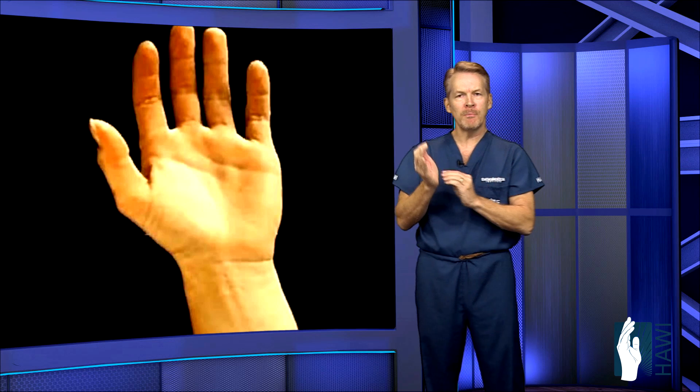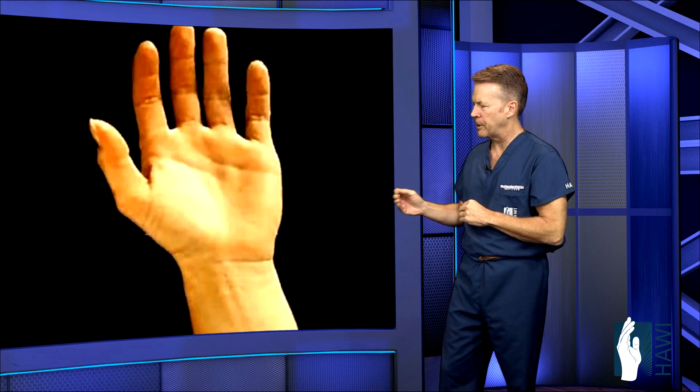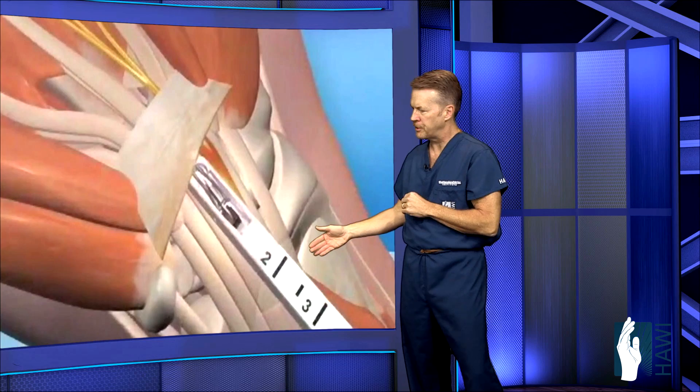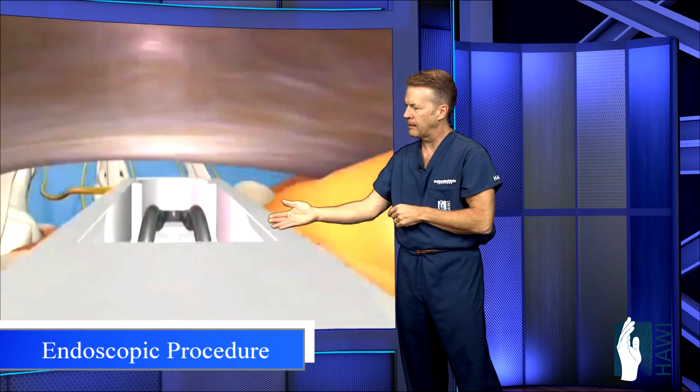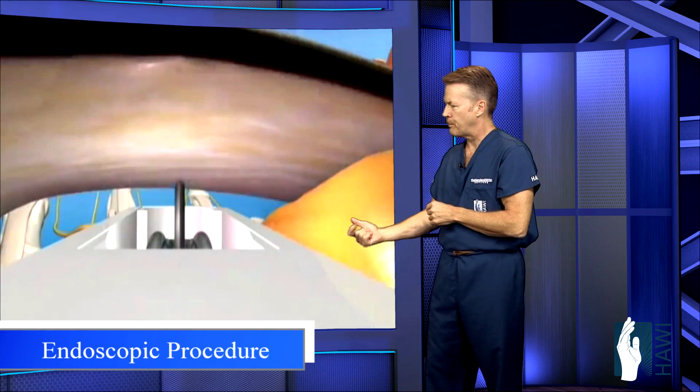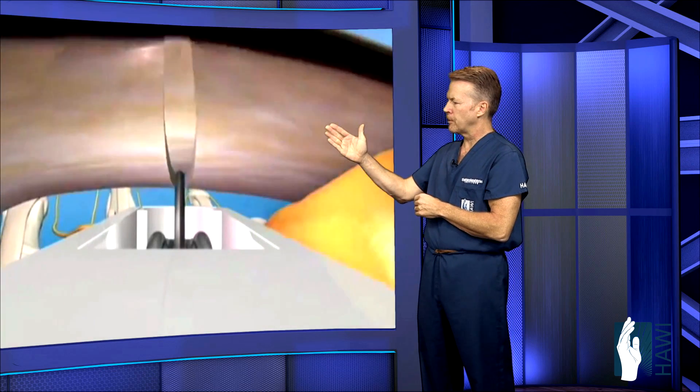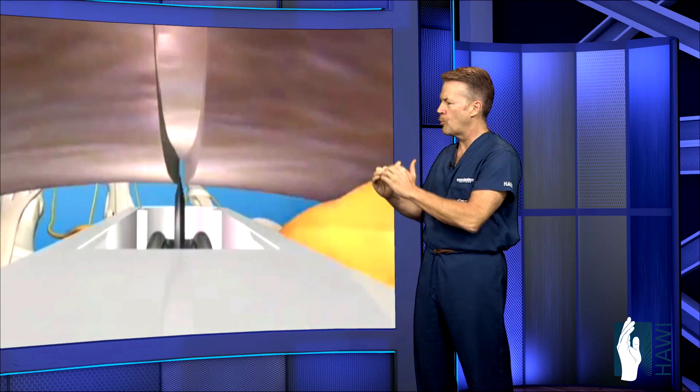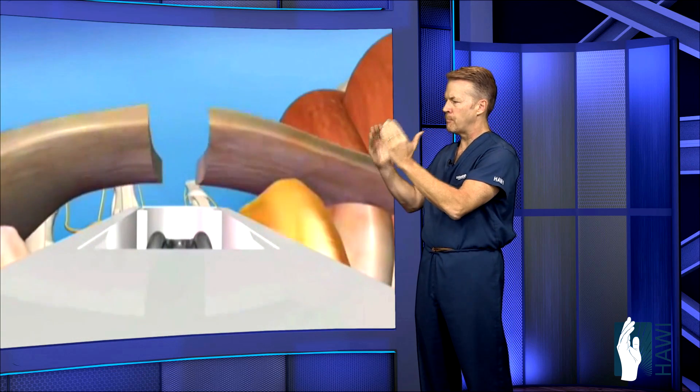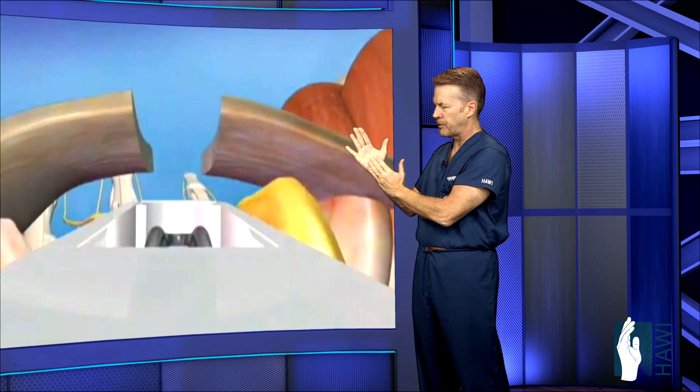This is opposed to a much smaller incision, one centimeter incision in the endoscopic procedure where you can see the scope going in to the carpal tunnel in this animation. You can see we pull a blade, the trigger, the blade pops up or a scalpel opening the ligament from this case the bottom up without having to go through all this tissue here.